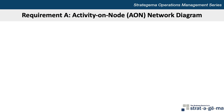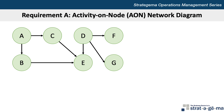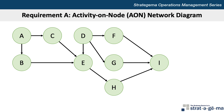Let's start with requirement A and draw an activity-on-node AON network diagram. From the table provided, activities A and D have no predecessors and are therefore starting points for their respective paths. Activities B and C come right after activity A. Activity E can start after activities B, C, and D are complete. Activities F and G can begin after activity D is complete. Activity H can begin only after activity E is complete. And the last activity I can begin after activities F, G, and H are complete. This is now our completed diagram.